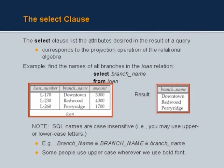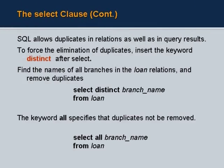SQL names are case insensitive — it doesn't matter what case you use. SQL allows duplicates by default. If you don't want duplicates, add the keyword DISTINCT after SELECT: SELECT DISTINCT branch_name FROM loan guarantees each branch name occurs exactly once. If you want to explicitly allow duplicates, you can say SELECT ALL, but that is the default behavior anyway. There are cases where you want duplicates — for example, when summing up all balances — and other cases where you don't.